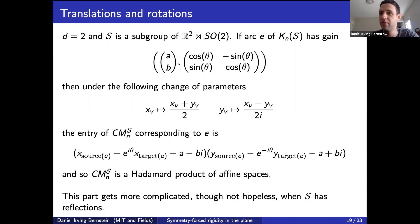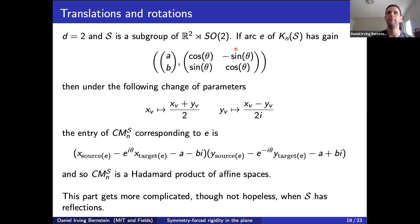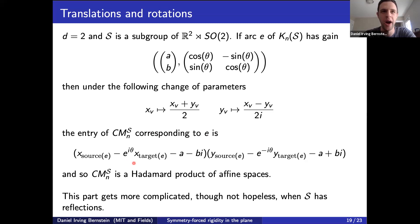In the d = 2 case, when S is a subgroup of orientation-preserving isometries, each group element has a translation part and a rotation part. For a rotation of angle θ, the rotation matrix has the standard form. Under this parametrization, the entry of the variety corresponding to arc e is an affine function of the x-coordinates times an affine function of the y-coordinates. This means the variety is a Hadamard product of affine spaces. This is precisely where the proof breaks down for reflections: with orientation-preserving maps, x- and y-coordinates separate cleanly across the Hadamard product, but reflections cause them to mix, making it a product of affine forms rather than a Hadamard product.